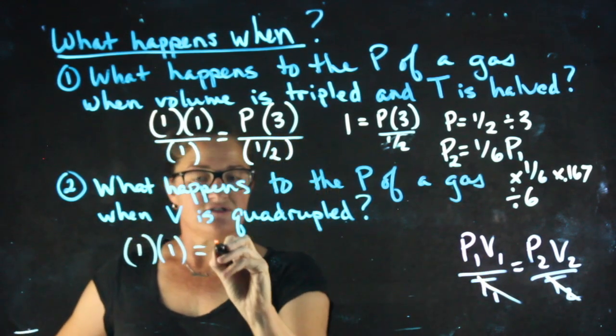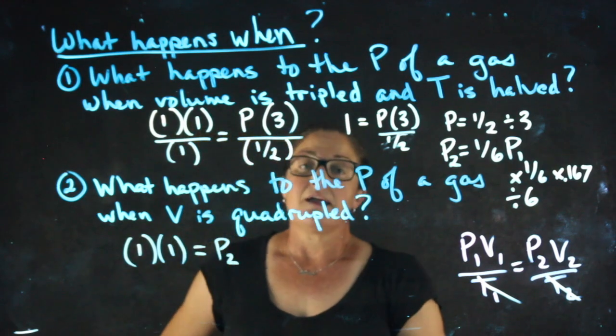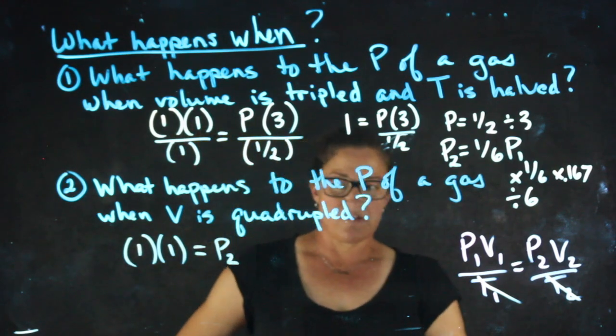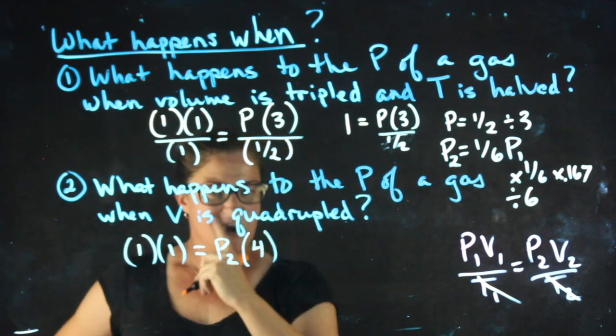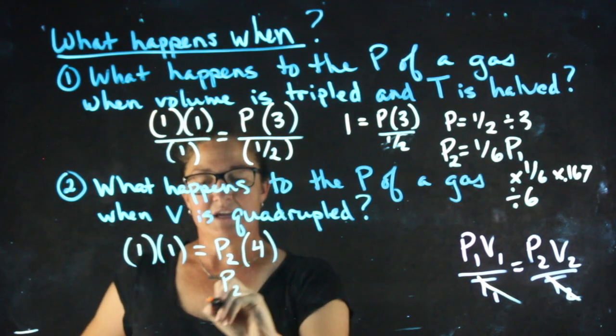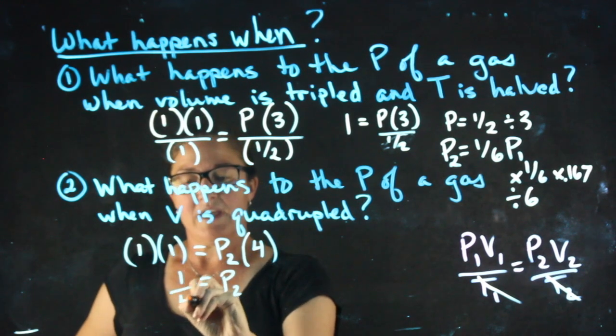What happens to the pressure, so I'm solving for P2 again. In the problems you try, you'll be solving for things other than P2. The volume is quadrupled, so my new volume is four times the original one. So solving for P2, we get one fourth.